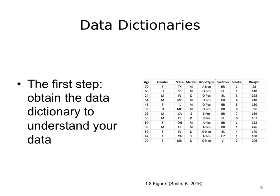An essential part of any data analysis is developing a correct understanding of the data you are working with. Take a look at this simple synthetic data set. Look at the columns for smoke and for weight — both are given in numbers. So shouldn't that mean that both could be analyzed using numeric methods? No. The values in the smoke column are referring to categories of smoking status. The only way you would know that is to obtain the data dictionary that the researcher developed to explain each field. Obtaining the data dictionary is an essential first step in understanding the data you are working with.